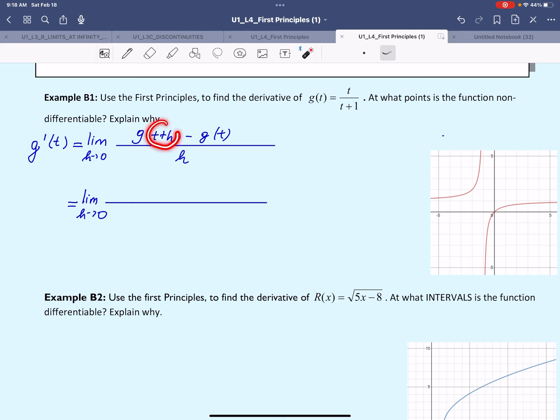Let's substitute the function g into the first principles formula. We have g(t+h), so wherever we had t, we replace it by t+h. This t becomes t+h, and this t down here also becomes t+h, plus 1. Then minus g(t) is t over (t+1), all over h.